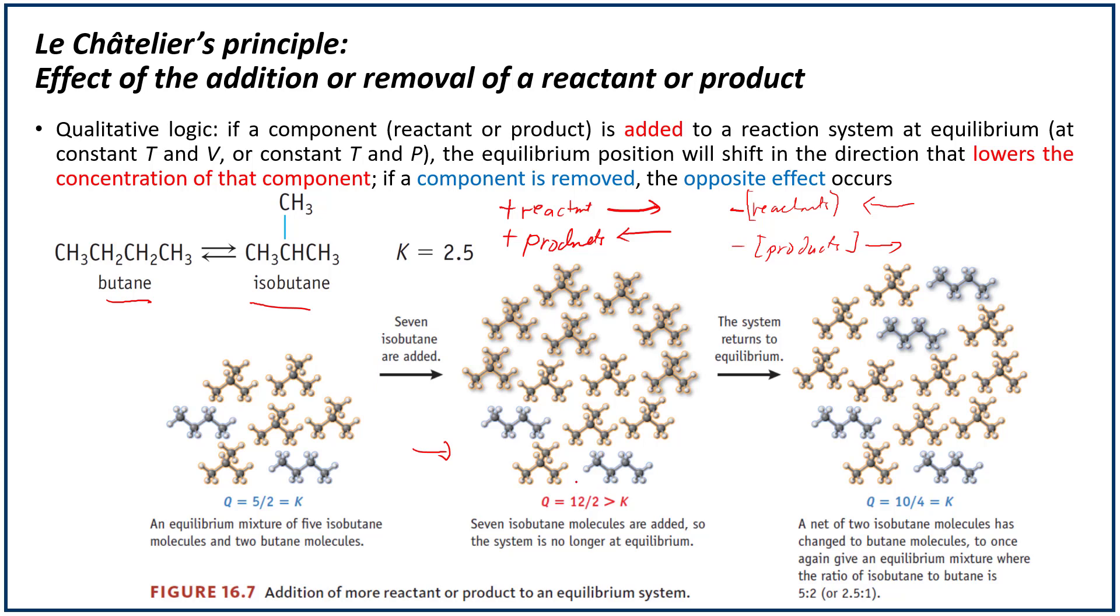Therefore, this reaction must shift towards returning to equilibrium in which we form more butane molecules. When it does that, the equilibrium is reestablished by the reaction shifting to the left. What happens is two of these isobutane molecules will actually be converted back into butane. Now we have a 10 to 4 ratio, which is mathematically equal to 5 over 2, and that's how the system regains equilibrium.